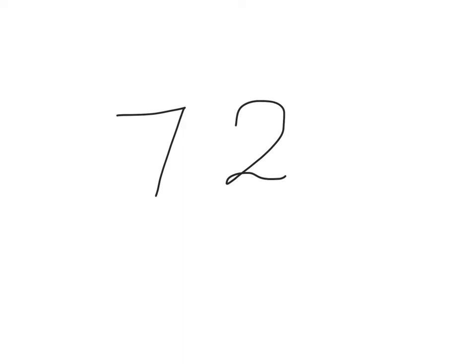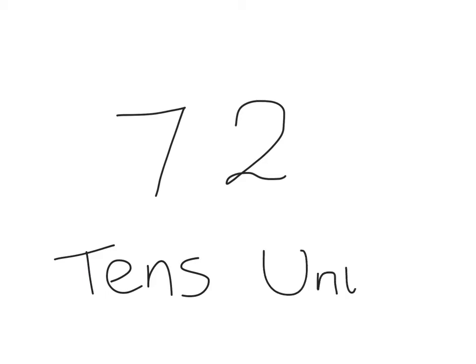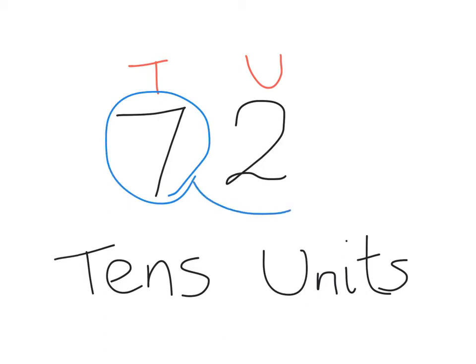Let's start with the number 72. We can split this number into its tens and its units. The tens looks at how many tens go into the number, and the units is how many ones are in there. In 72, there are 7 tens and 2 ones. 7 tens is also known as the number 70, so we know that this 7 represents the number 70.